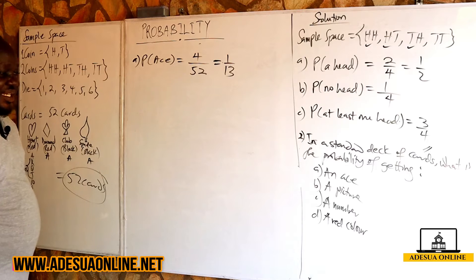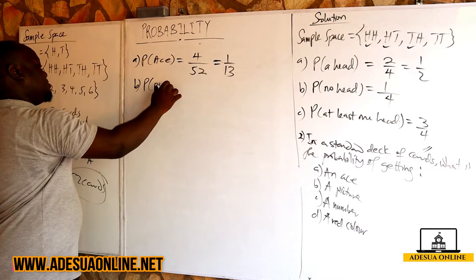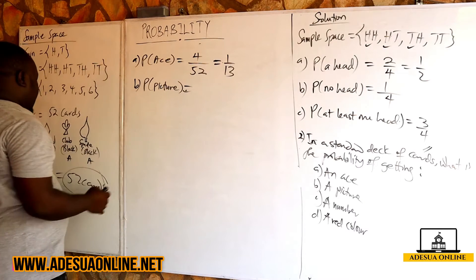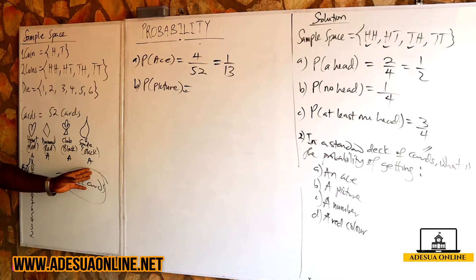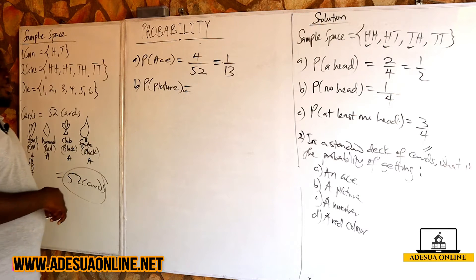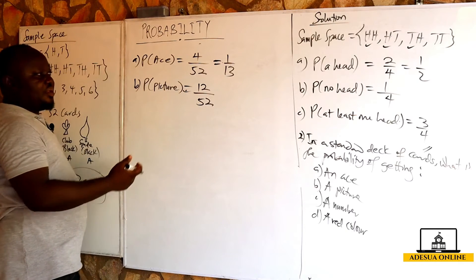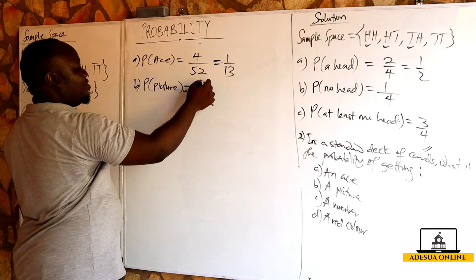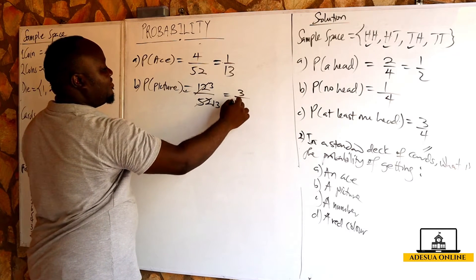Now let's go for the second part: the probability of getting a picture. The number of picture cards for hearts is king, queen, and jack — that's three. We have the same three for each of the four suits, so three times four gives us 12. The probability of getting a picture is 12 over 52, which simplifies to 3 over 13.